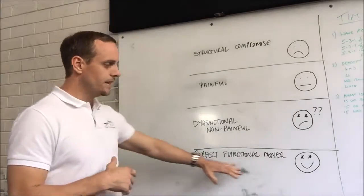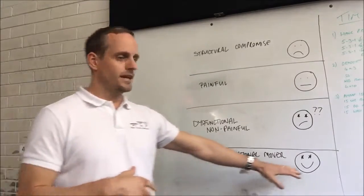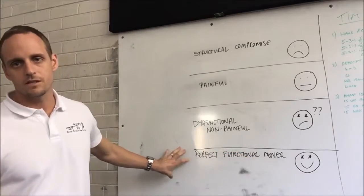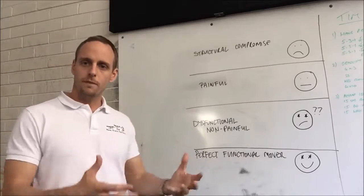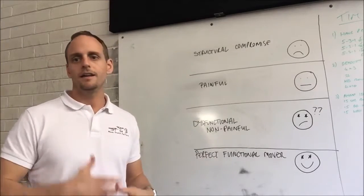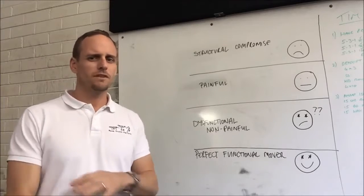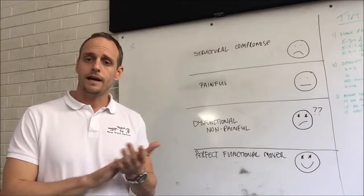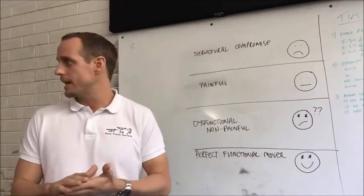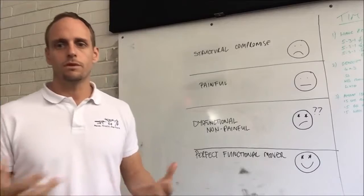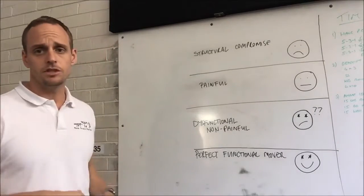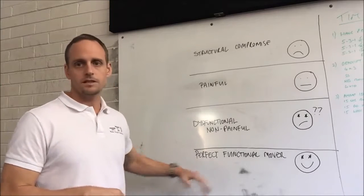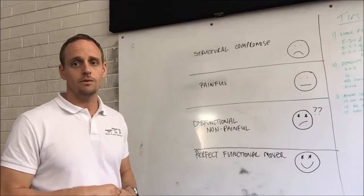So down the bottom here, we have a really happy camper, happy smiley face. This is our perfect functional mover. This is where everybody wants to be. We want to come into training, hit it hard, enjoy ourselves, not feel any joint pain, not feel any nerve pain, not feel stiff and sore in the joints or not be able to get out of bed properly the next day. We just want muscle soreness. We want to be better every day. There's always a small risk of injury, just freak incidents, but this person's movement quality isn't going to be the cause of their problems.